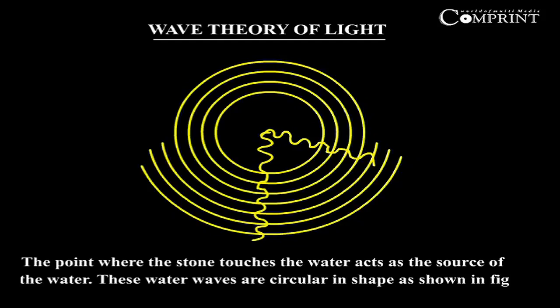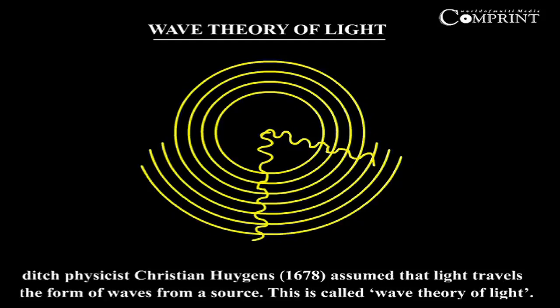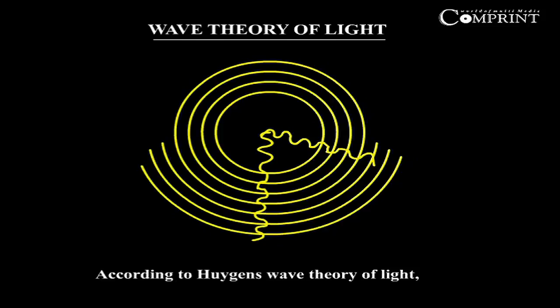These water waves are circular in shape, as shown in the figure. Dutch physicist Christian Huygens assumed that light travels in the form of waves from a source. This is called the wave theory of light.